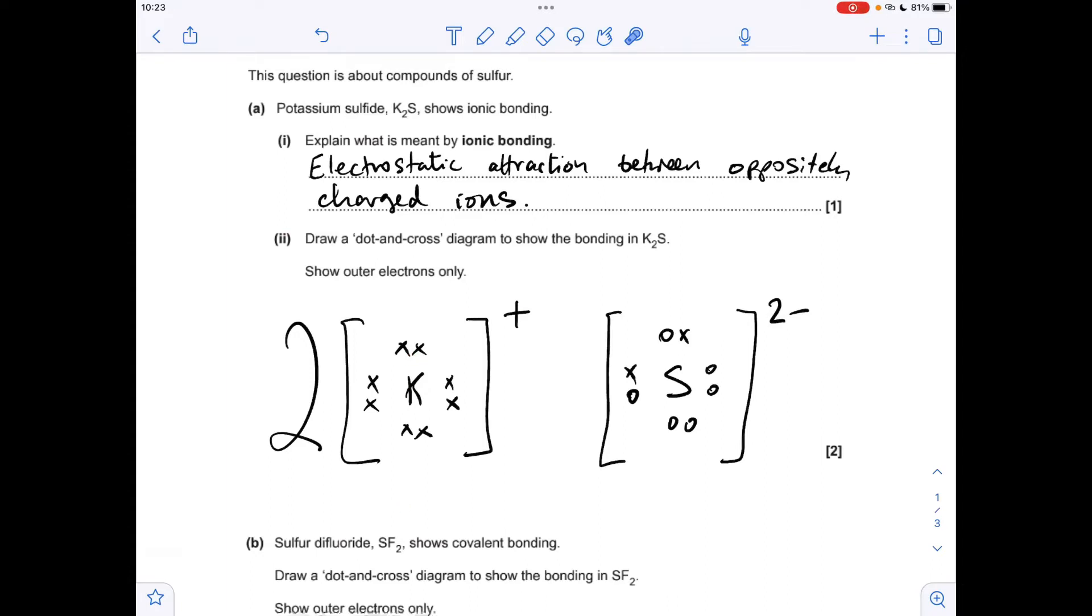Moving on to the sulphide ion. Sulphide is in group six, so we need six valence electrons. Because I've gone for crosses for the potassium, I'm going for these open circles. They just need to be a different symbol to the cross. Six of those and two crosses, because each of these potassiums has basically given an electron to this sulphur to turn it into this two minus ion.